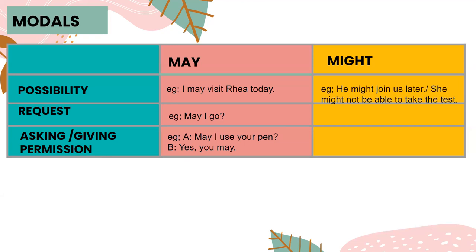When we say he might join us later or she might not be able to take the test, it is showing possibility. However, with might, the possibility is a little more distant — the percentage of certainty is a little lower than with may. So he might not join us means there is quite a good chance he won't come. Might and may can be used interchangeably, but might carries a slightly higher degree of uncertainty.